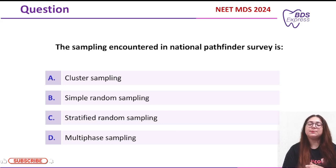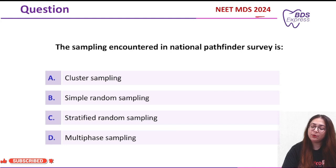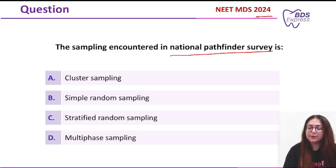Welcome to MedicoApps BDS Express. In today's class, we'll be seeing this NEET MDS question which was asked in 2024. The question was: the sampling encountered in National Pathfinder Survey is - options given were cluster sampling, simple random sampling, stratified random sampling, and multiphase sampling.